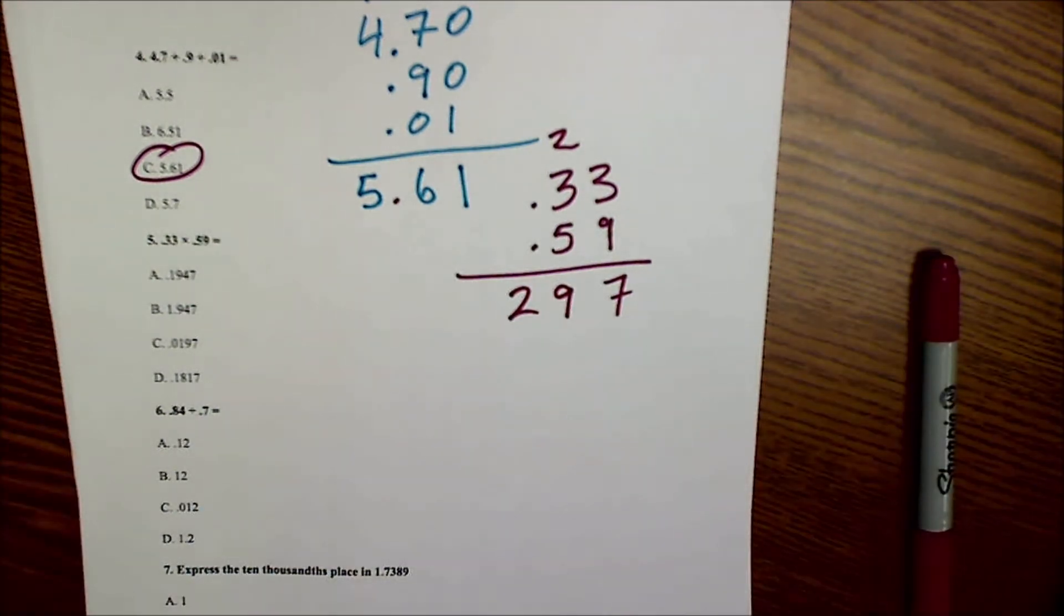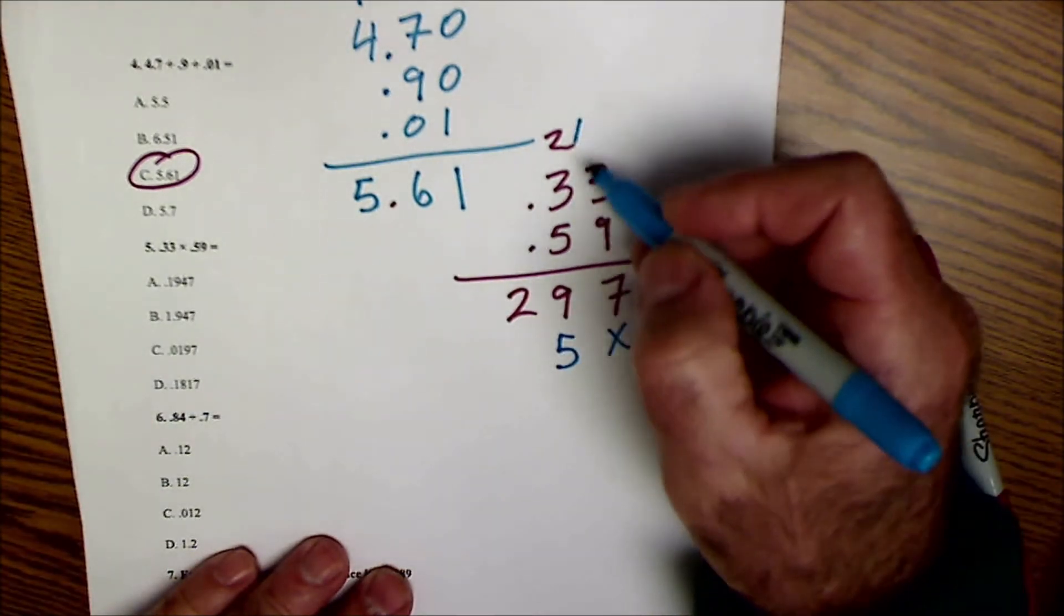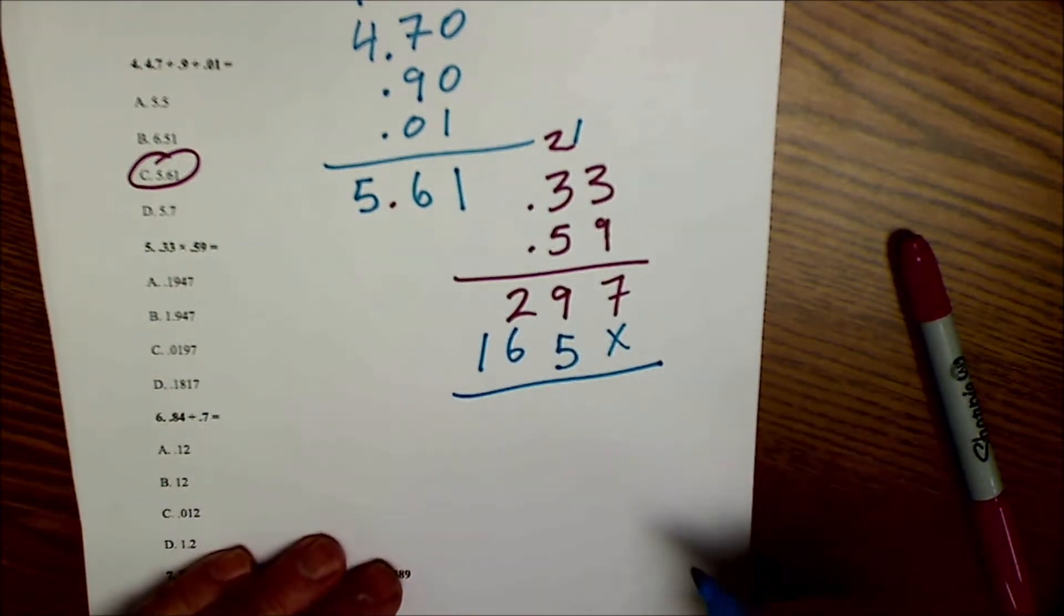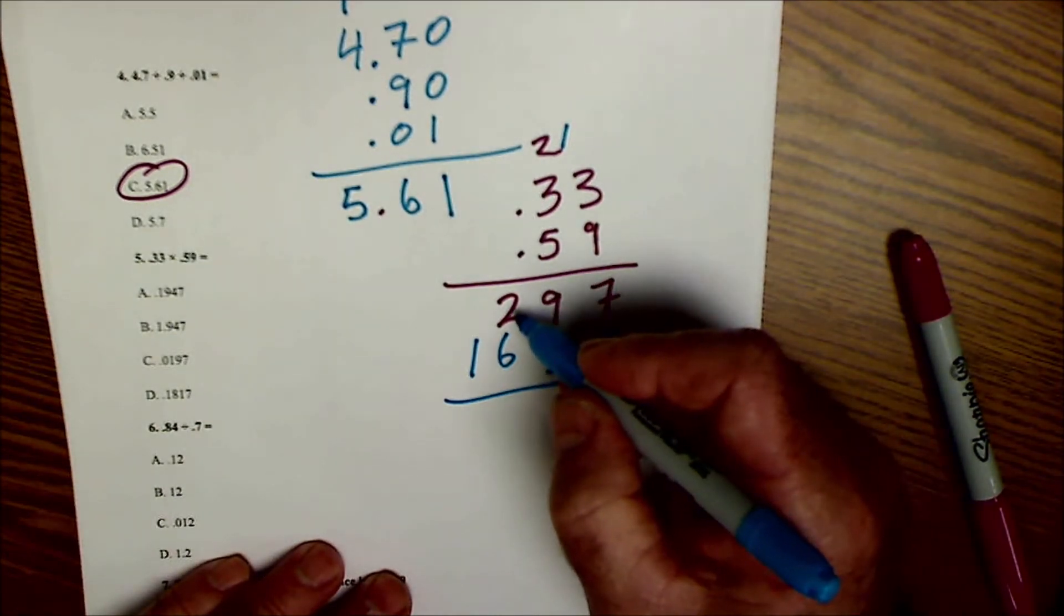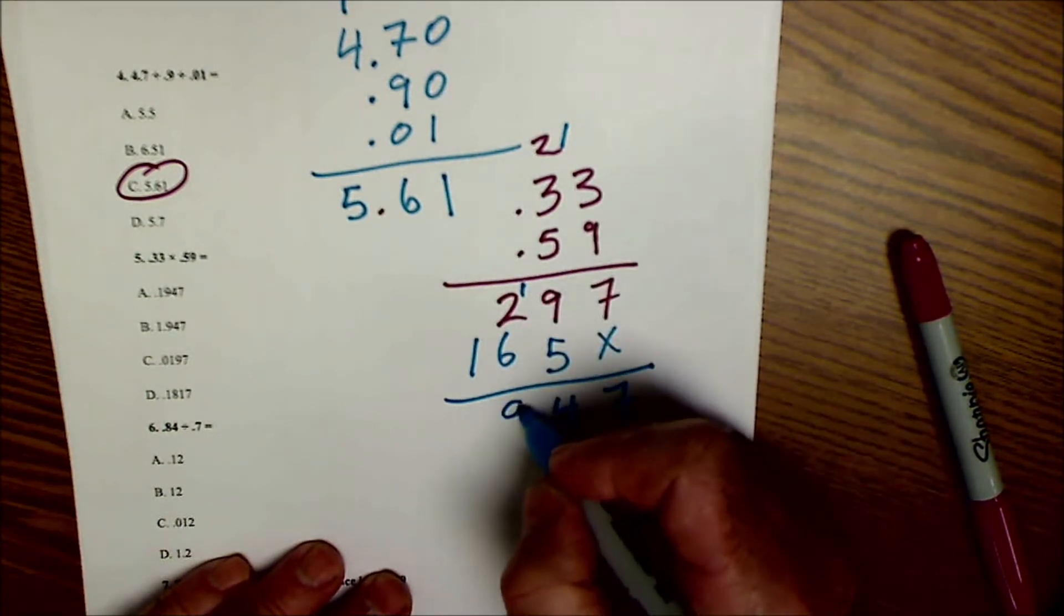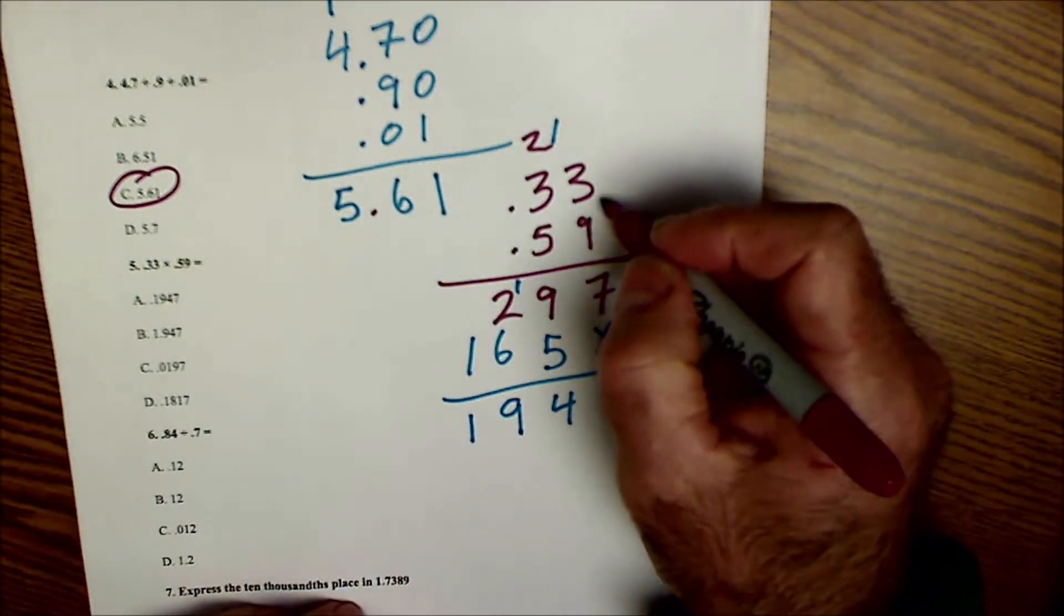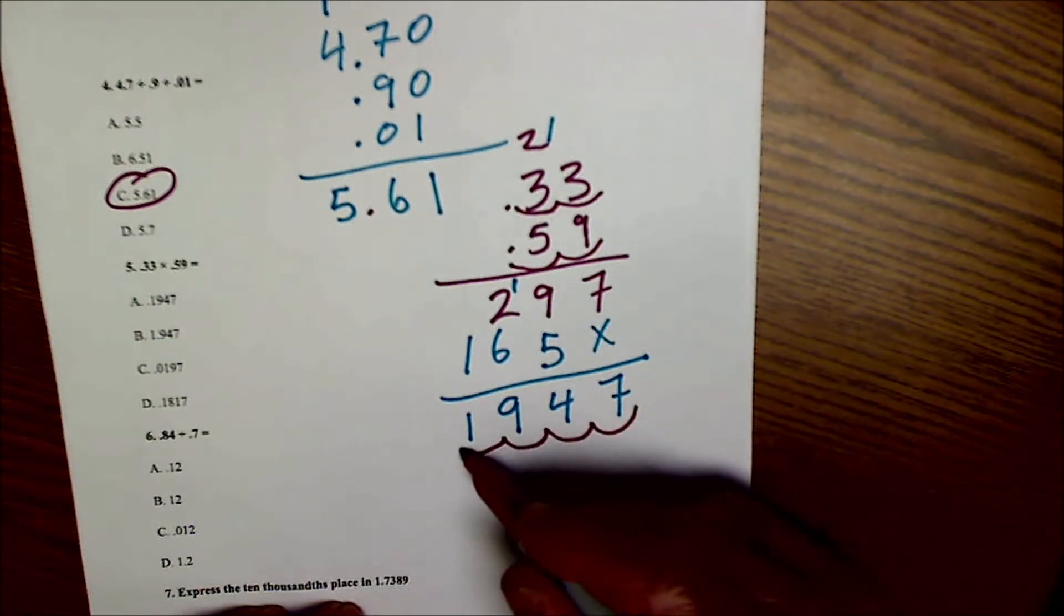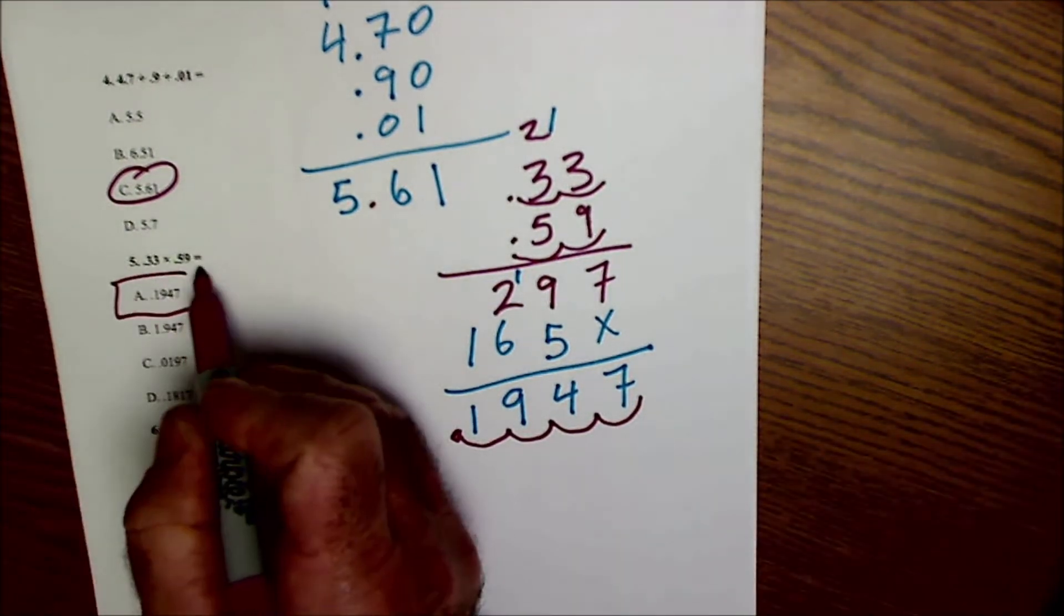And now I'm gonna do 5. 5 times 3 is 15, carry the 1. 5 times 3 is 15 plus that 1 is 16. Now I'm gonna add those together: 7, 9 and 5 is 14, carry the 1, write 9 and 5 is 14, carry the 1, 8 and 1 is 9, and then 1. I'm all done. Now I go back and I look at my decimal places, I'm over 1, 2, 3, 4. So I come over here 1, 2, 3, 4, and I have .1947. .1947 is answer A.